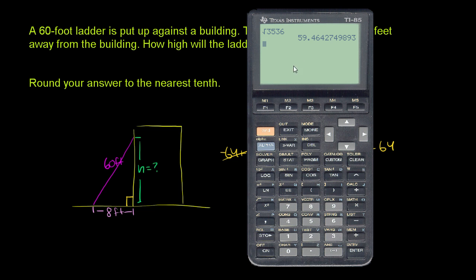They want us to round to the nearest tenth. 59.46 - the 6 is greater than or equal to 5, so we round up to 59.5.